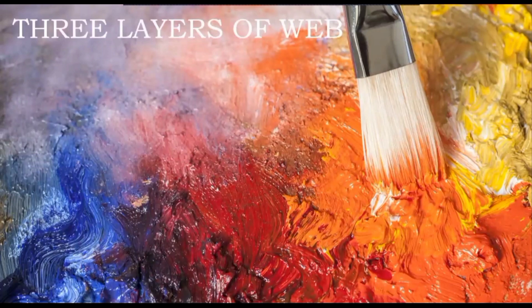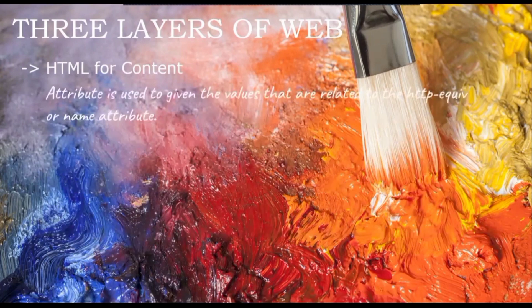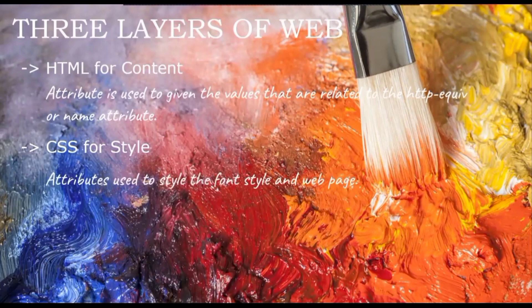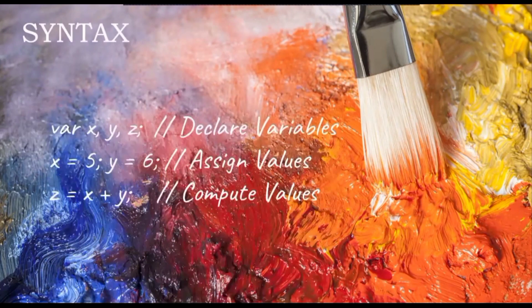What are the three layers of the web? The first is the markup language HTML, followed by CSS, and followed by JavaScript — each plays a very prominent role. HTML is used for content. CSS — Cascading Style Sheets — is used for style: font style and other page styling. And JavaScript is used for the behavior of web pages. A behavior is an object that defines event handlers; a behavior may also define additional helper methods and properties.